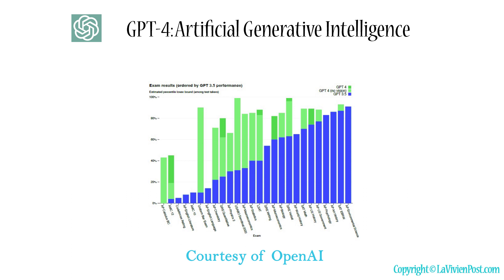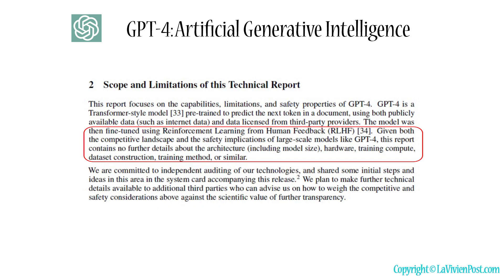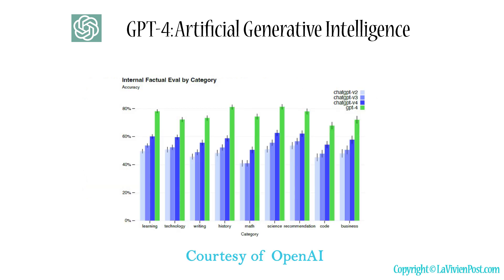GPT-4 exhibits human-level performance on various professional and academic benchmarks. OpenAI did not give out details about the architecture, including model size, hardware, training compute, dataset construction, training method, etc. But it is certain that GPT-4 was trained using an unprecedented scale of compute and data. GPT-4 demonstrates remarkable capabilities in a variety of domains and tasks, including abstraction, comprehension, vision, coding, mathematics, medicine, law, understanding of human motives and emotions, and more.